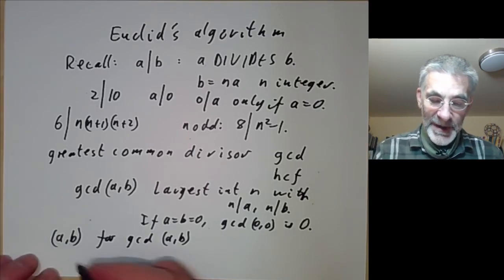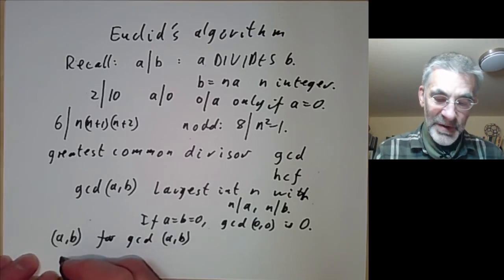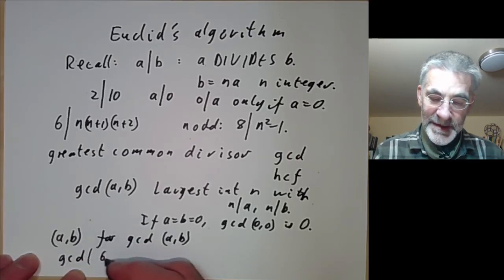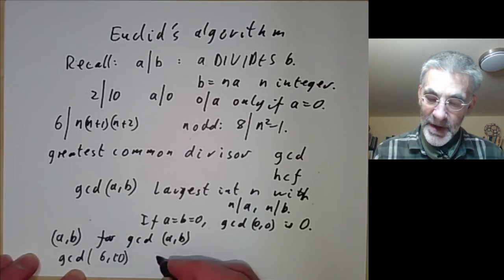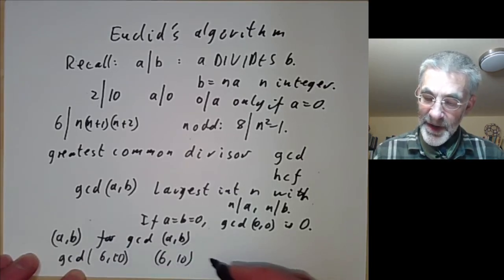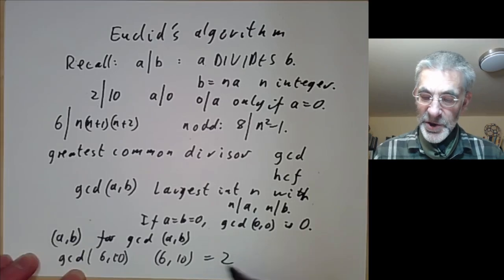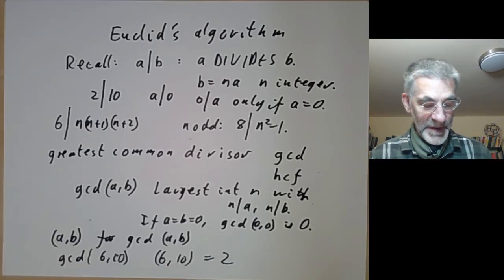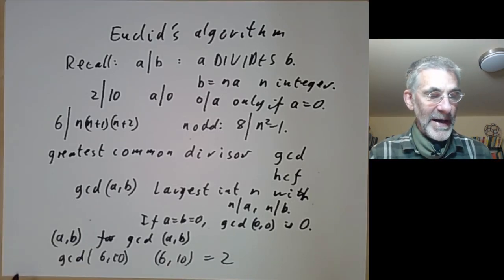For example, the greatest common divisor of 6 and 10, written as (6, 10), is just 2, because that's the largest integer dividing both 6 and 10.